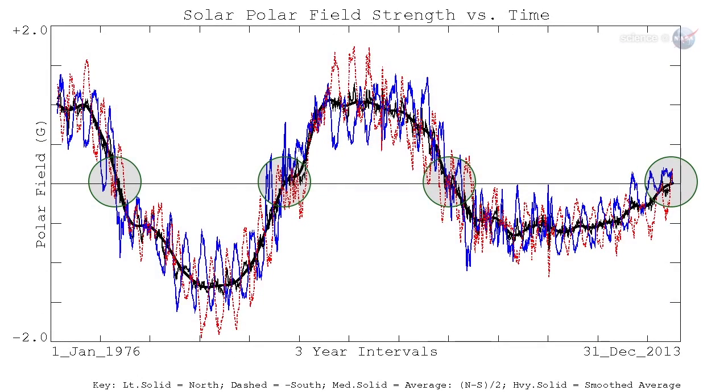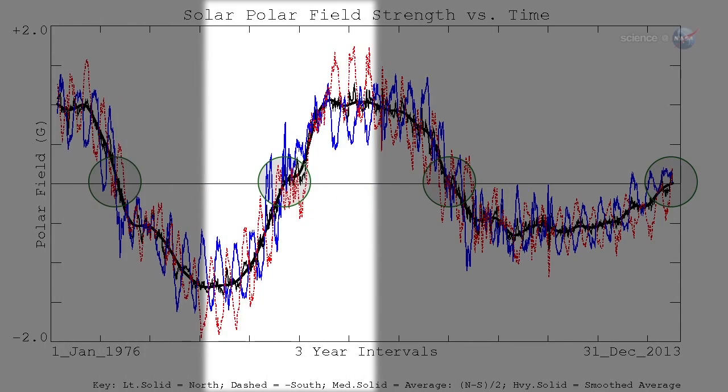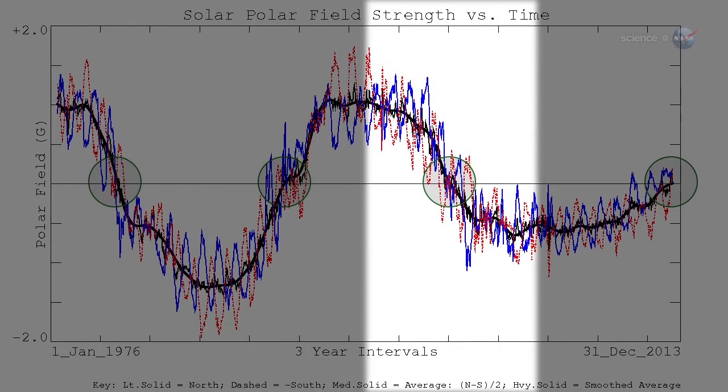Magnetograms at Wilcox have been tracking the Sun's polar magnetism since 1976, and they have recorded three grand reversals, with a fourth in the offing.